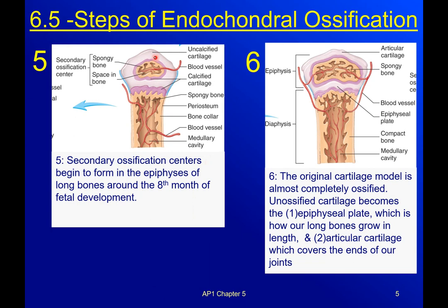Step five: the secondary ossification centers — because we've got two ends to the bone — begin to form in the epiphyses. You can see the blood vessel invading and bone starting to replace the calcified cartilage. This happens around the eighth month of fetal development, so that by the time you're born you primarily have bone in your bones — though if you're a preemie that's not necessarily true.